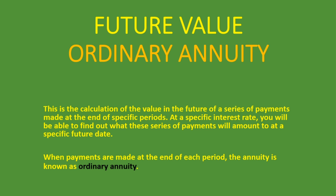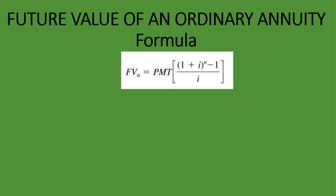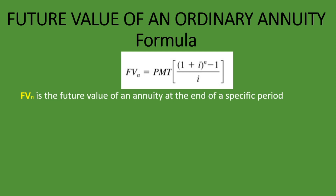Future value of an ordinary annuity — what is the formula? Well, the formula is: FVN equals PMT times (1 plus I) to the power N, minus 1, divided by I. FVN is the future value of an annuity at the end of a specific period, and that is why we added the N. If it were just FV, it would be the future value of a lump sum like in our previous example.